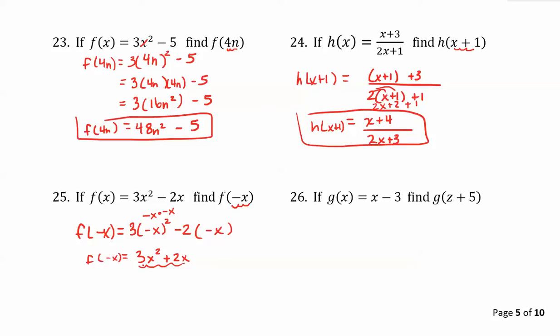For our final example, we have g of x equals x minus 3. We want to find g of z plus 5. So we want to change all the x's in the function to z plus 5 groups.